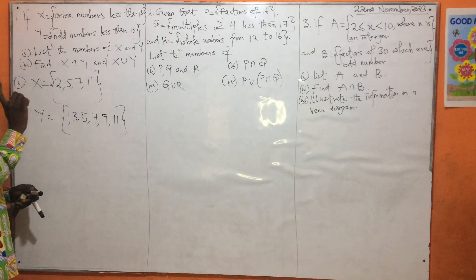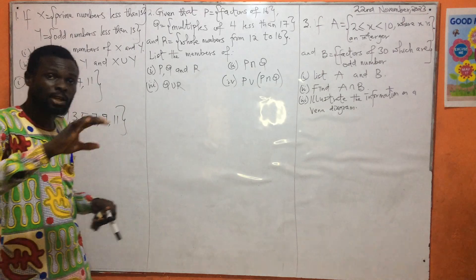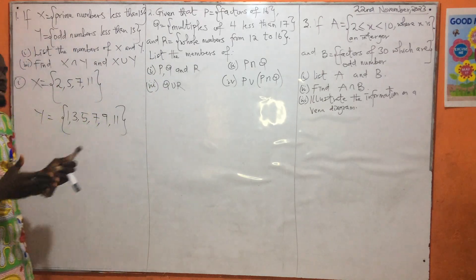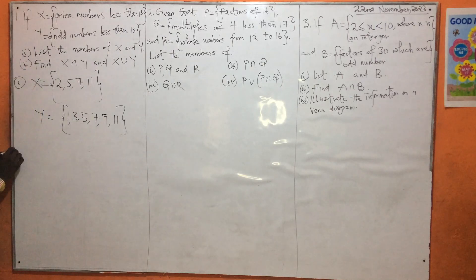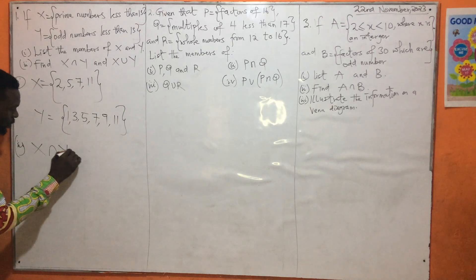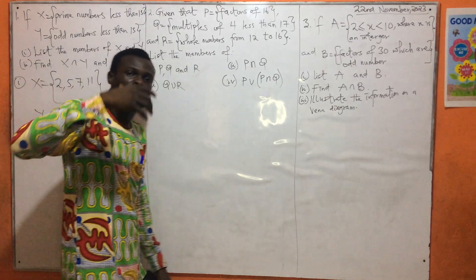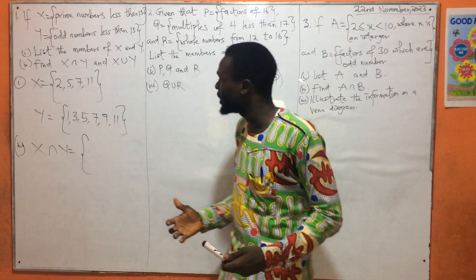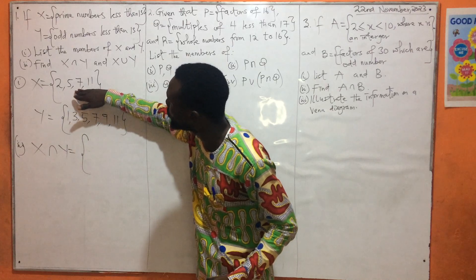Know that 1 is an odd number because odd numbers are numbers that are not divisible by 2. So after listing them, we have been asked to find X intersection Y. When we introduced this, we said that when we have been asked to find X intersection something, it means what can you see here and also see here.